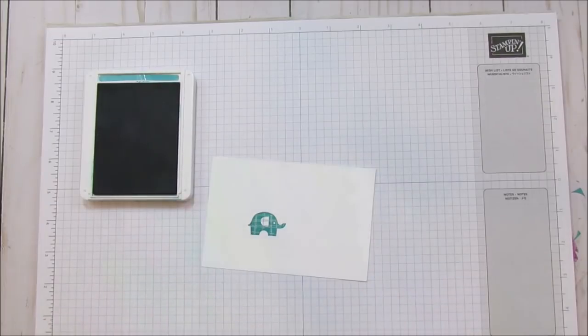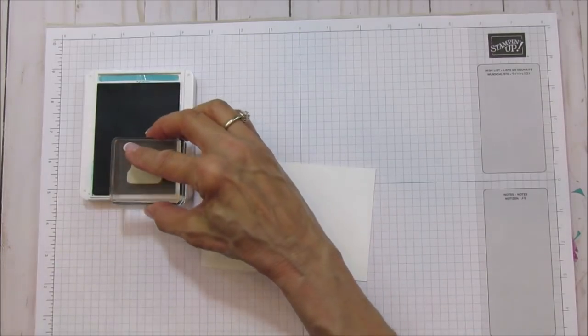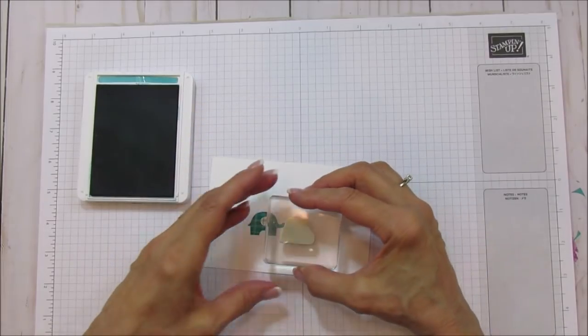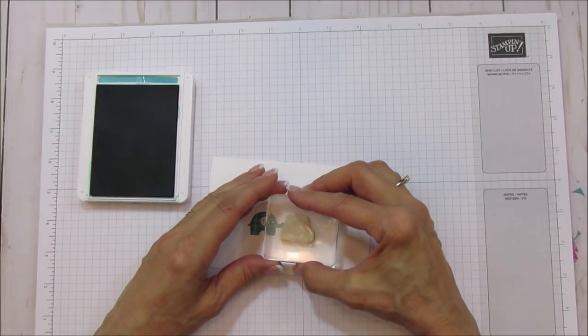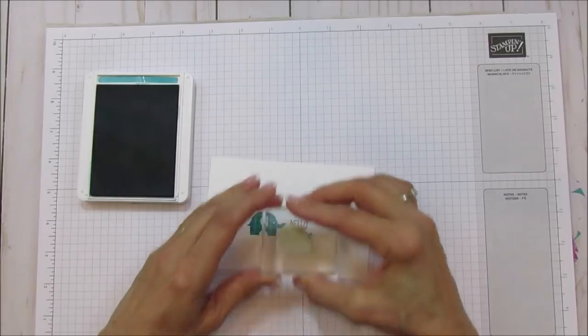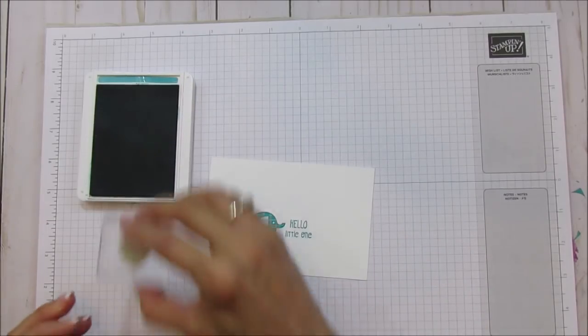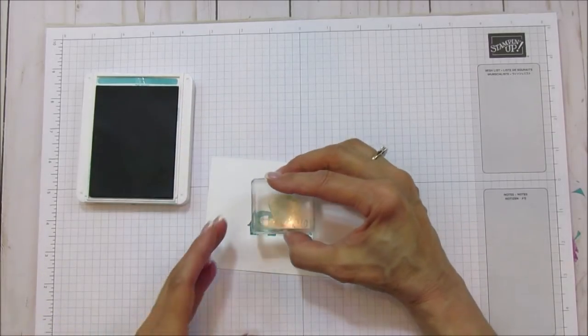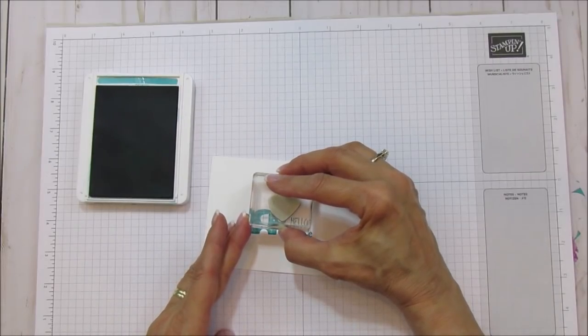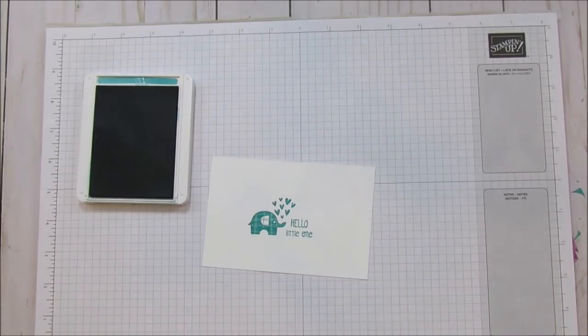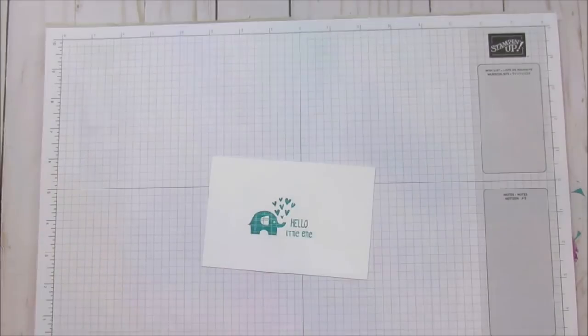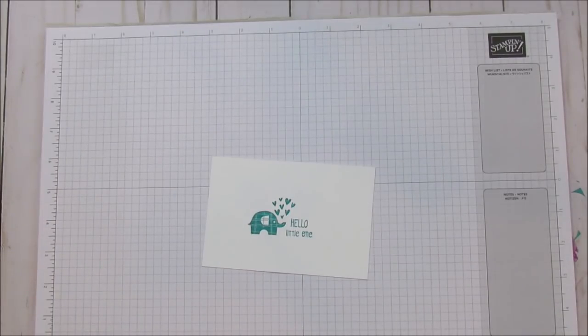Stamp our little elephant. He's so cute. Then we're going to do the hello little one. This one's a little bit trickier to line up but very easy. Then we're going to do our little hearts. Isn't that cute? I love this color.